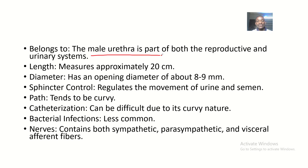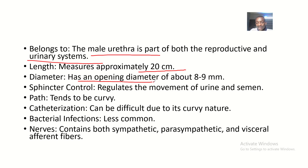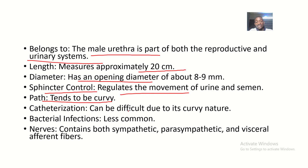The male urethra is part of both the reproductive system — as in ejaculation — and also the urinary system. Its length is approximately 20 centimeters, and it has an open diameter of about eight to nine millimeters. Sphincter control regulates the movement of urine and semen. It tends to be curvy, which makes catheterization difficult because of both its curvy nature and its length. Bacterial infections are less common because it is long.